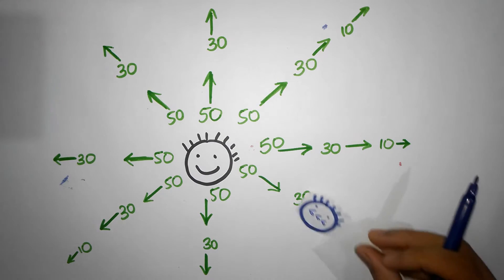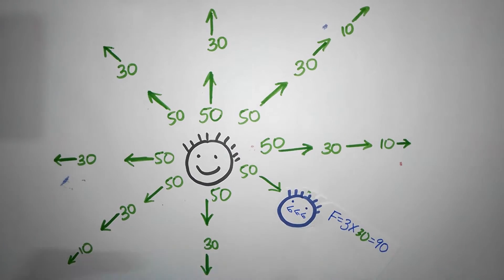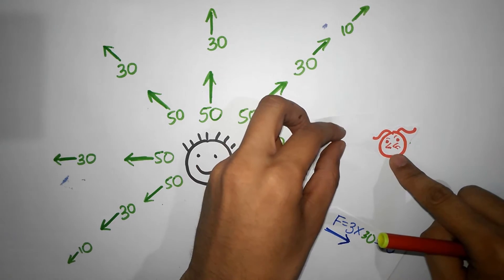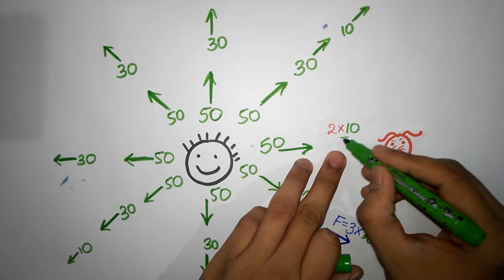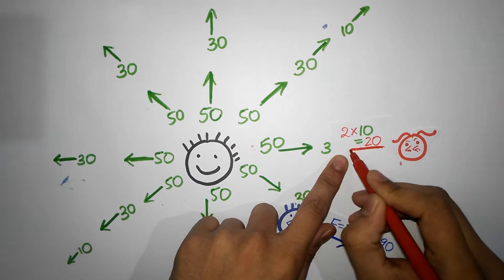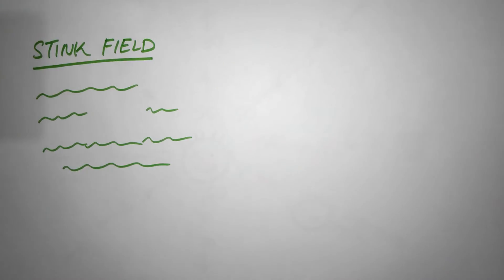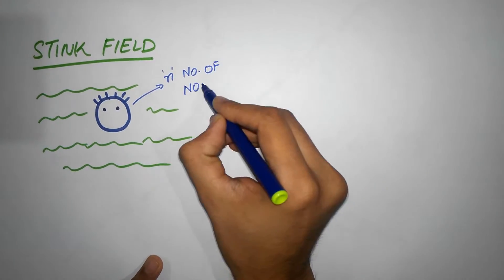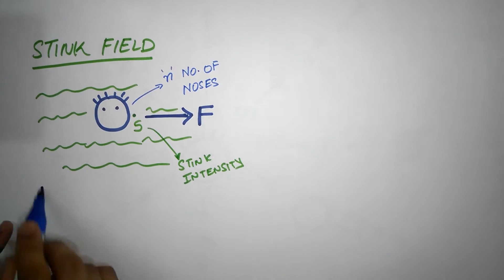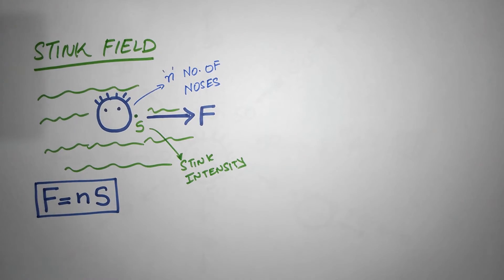Which means if I place a boy with say 3 noses over here, he would experience 3 times 30, which is equal to 90 units of force. What if we place a girl with 2 noses over here? Well, then she would experience 2 times 10 equals 20 units of force. But notice, since she's a girl and we mapped out the field using a boy as a standard, the force is going to be in the opposite direction of the stink. Oh, I mean the field. So if we keep a person of n number of noses somewhere where the field intensity is s, then he or she will feel a force f equal to n times s, right? Because s, the field intensity, is the force that a person with one nose would feel. Makes sense, right?